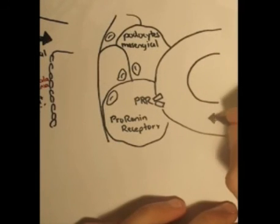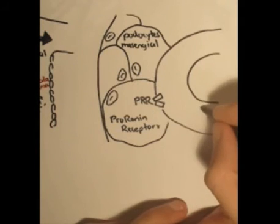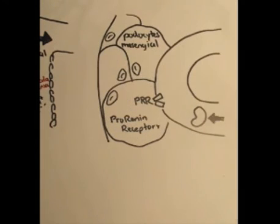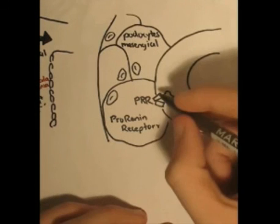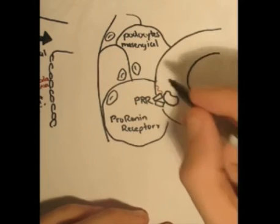Here we will draw pro-renin with the extra 43 amino acid chain with this red, depicted in red. What it does is it will bind to the pro-renin receptor.